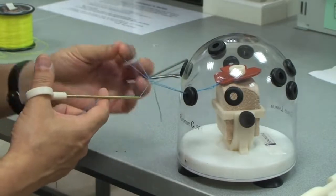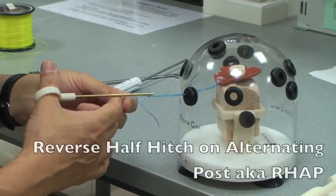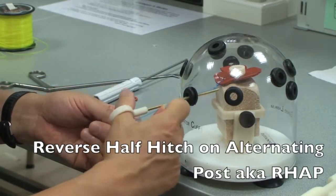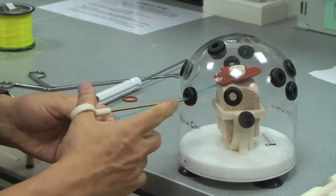Then, that is called a reversed half hitch on the post. There you go.